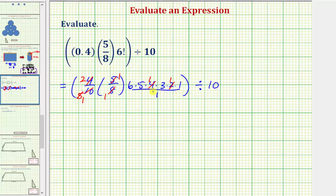Notice now inside the parentheses we have a denominator of one, so let's find the product. Inside the parentheses we have two times six, which is 12, times five, which is 60, times three, which equals 180.